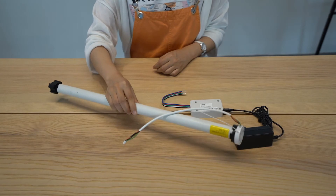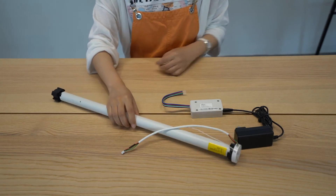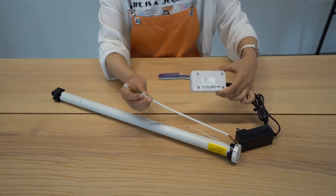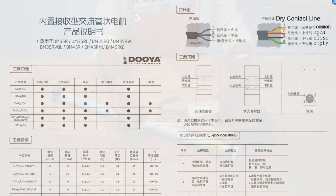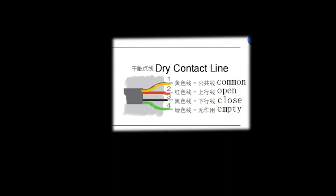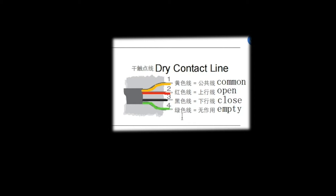Today I received a roller shutter and let's see if this shutter can be connected to a smart general controller. From the motor's menu we can see that it supports dry contact input and has 4 control lines. Separately, the switch of the motor is controlled by open or close using the red line and black line. The yellow line is the common line, and the green line has no effect.